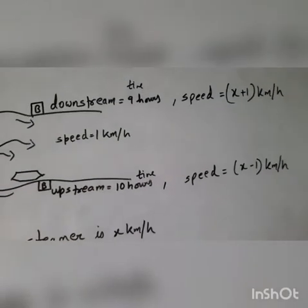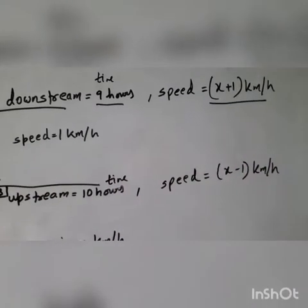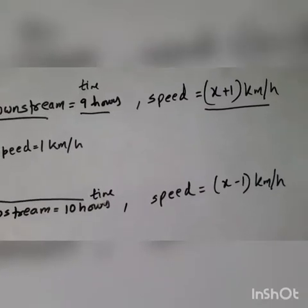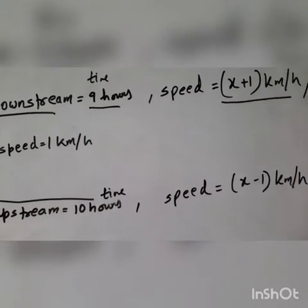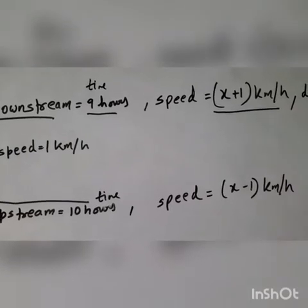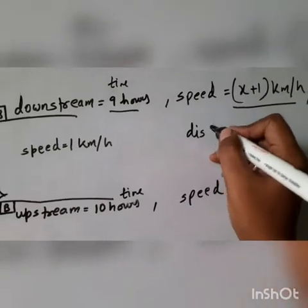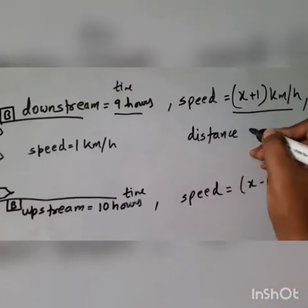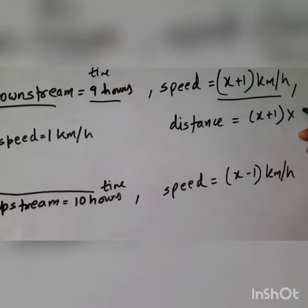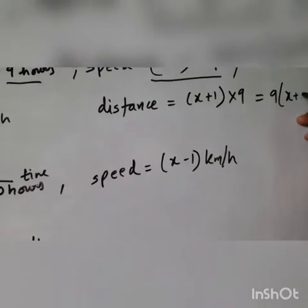So speed of boat will be x minus 1 km per hour for upstream. So you see we have been given with time and we have speed, even in the terms of variable but we have time and speed. So we can calculate distance. Now distance equals speed into time. So I will write here again, distance equals (x + 1) into 9.